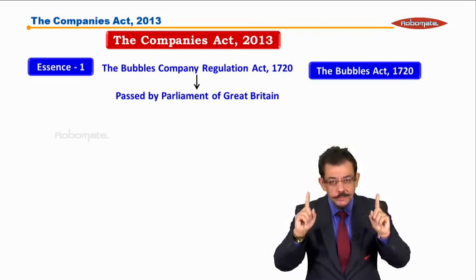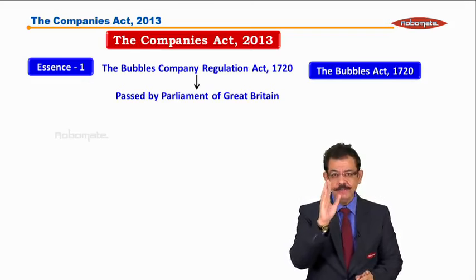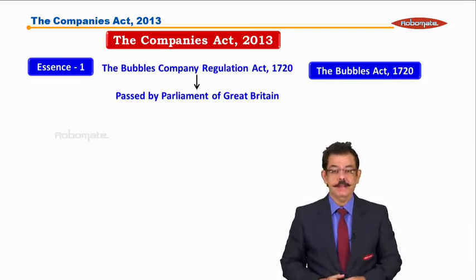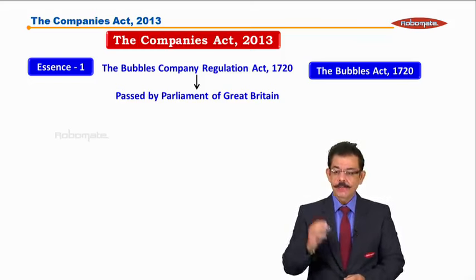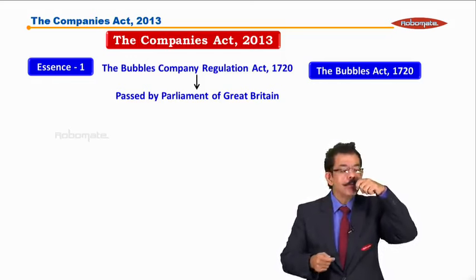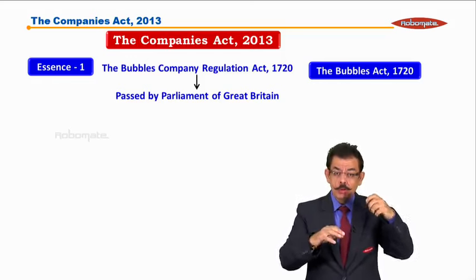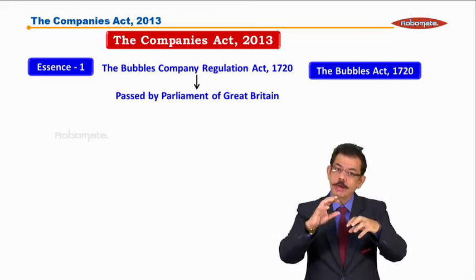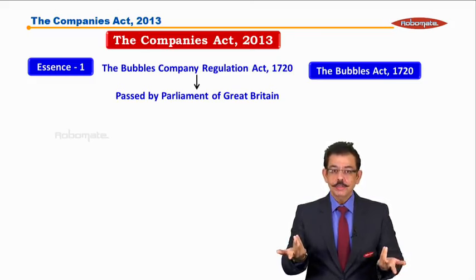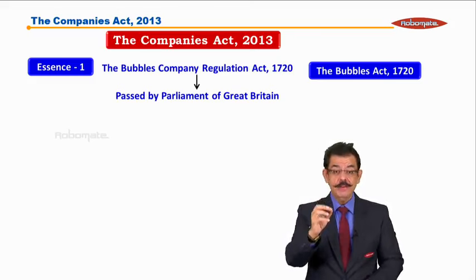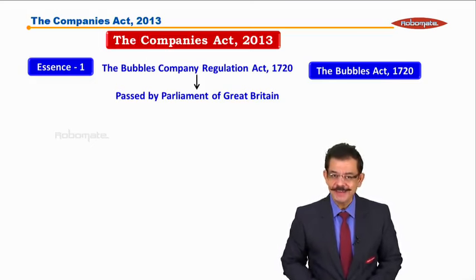Lekin ek baat dhyan dijiye — ussi samay, England mein especially kuch aisi companies aayin jinko bubbles companies kaha jaata tha. What is the characteristic of bubbles? Bubbles ke characteristics kya hain? Bubbles aata hai aur phut jaata hai. Toh aise hi logo ne paisa lagaya, aur agle din woh company phut gayi — gone, vanished. Toh isliye ye jaanna bahut zaroori hai ki bubbles kya hain, tabhi toh iska base banega Companies Act ka.